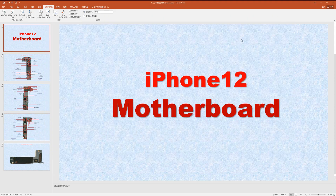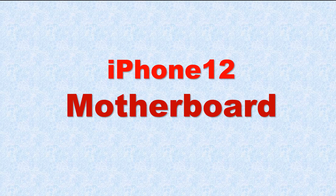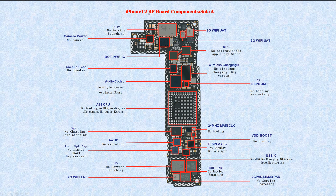Hello, I'm Frank from Fengkong Team China. I'd like to talk about the iPhone 12 motherboard — the components and their functions. The iPhone 12 has two boards: one is the AP board, also called the logic board, and the other is the BB board, the baseband board. Let's go.